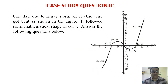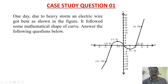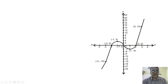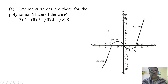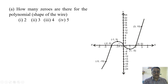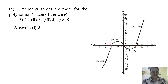Case study question one: One day due to heavy storm, an electric wire got bent as shown in the figure. It followed some mathematical shape of curve. The first question is how many zeros are there for the polynomial shape of the wire. The answer is three — the points of intersection with the x-axis: one, two, three. So the correct answer is the second option.